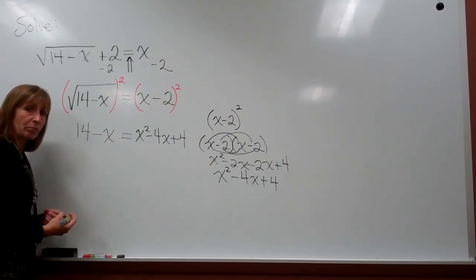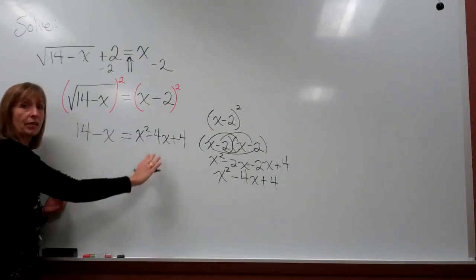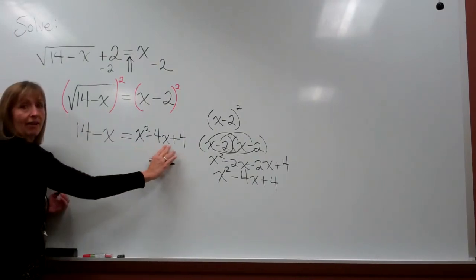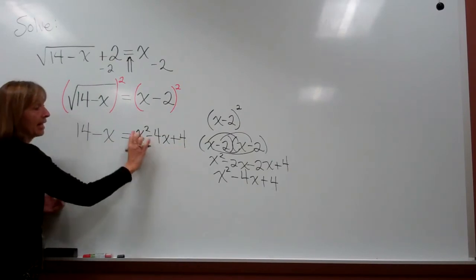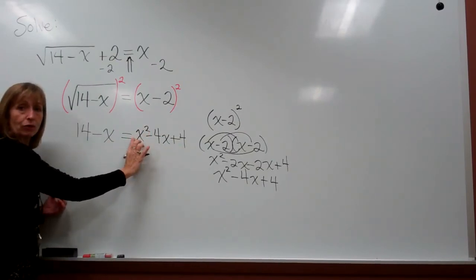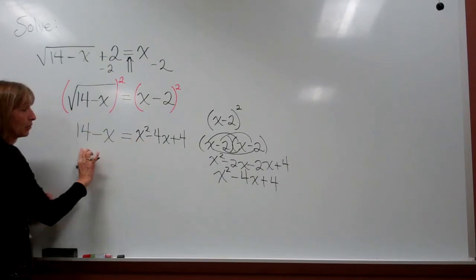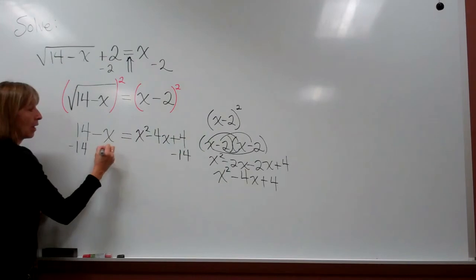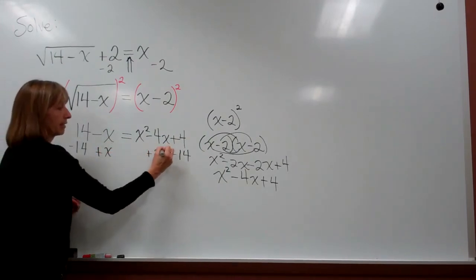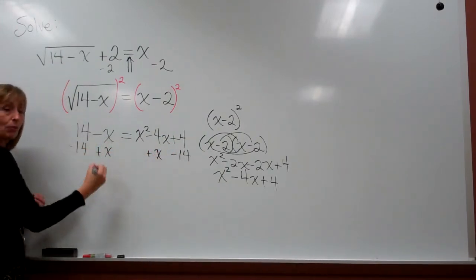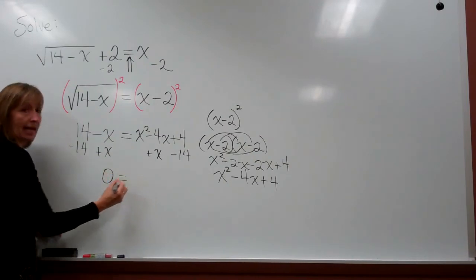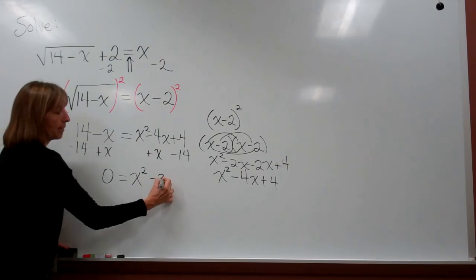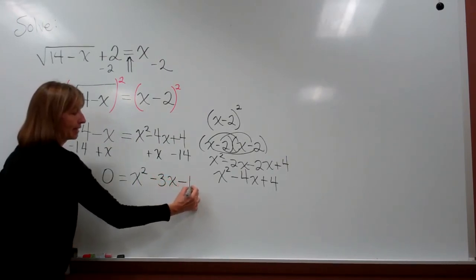To try to solve it by factoring, the very first step is to get all the terms on one side and 0 on the other side. Since I already have three terms on the right-hand side, and my coefficient in front of my square term over there is positive, let's go ahead and subtract our 14 from both sides, and add our x to both sides. That will give us 0 on the left-hand side, and then on the right-hand side, combining like terms, we get x squared minus 3x and then minus 10.